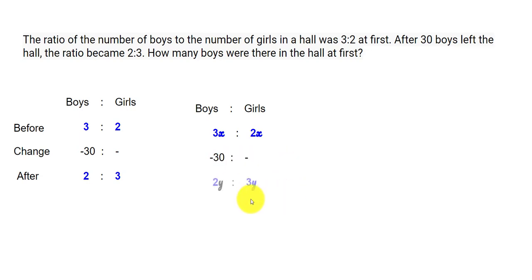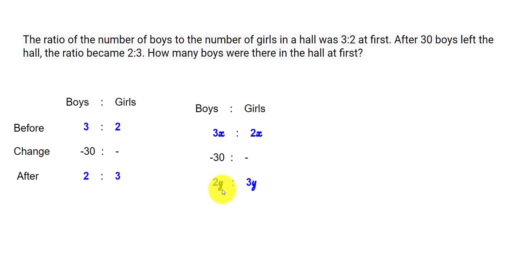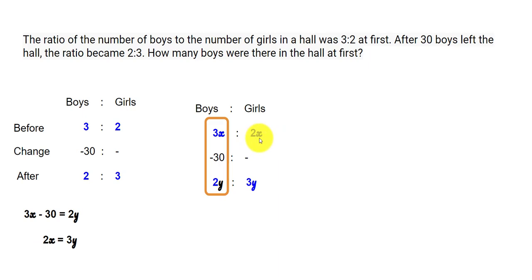The change is minus 30 for boys, and we end up with 2y to 3y after. We can now write two equations. First equation: 3x minus 30 equals 2y, since 30 boys left and the remaining boys are 2y. Second equation: 2x equals 3y, since the number of girls did not change. These are our two simultaneous equations.